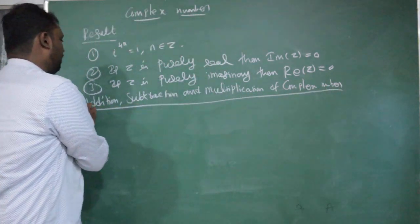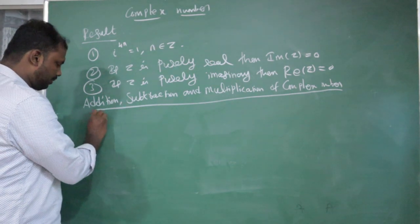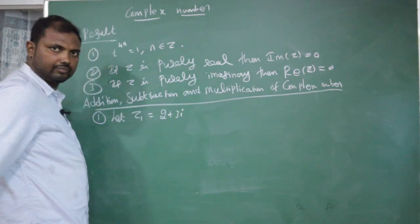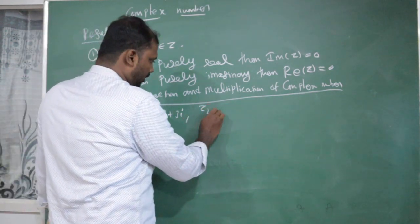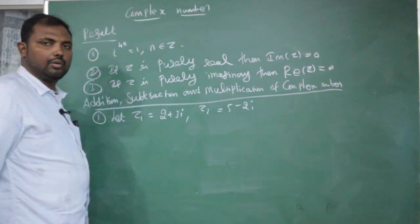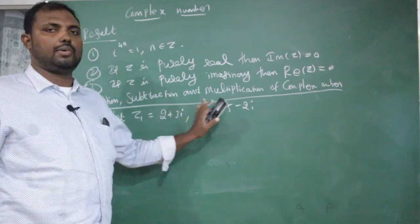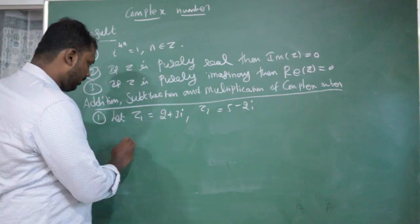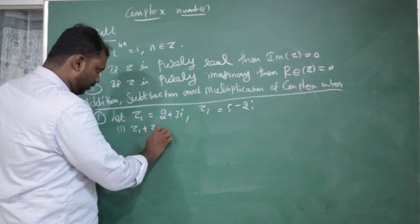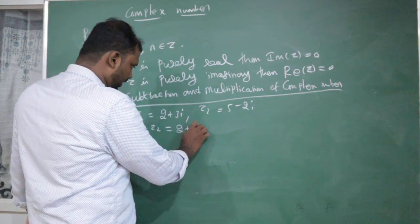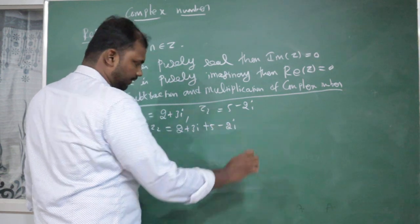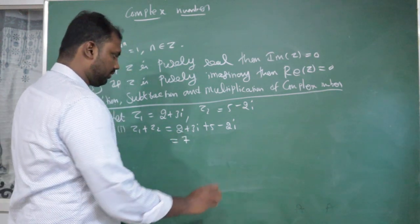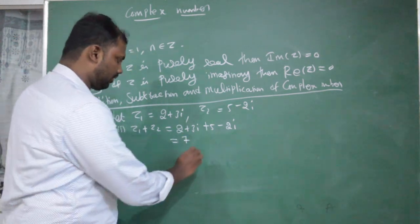Addition of complex numbers: let z1 equals 2 plus 3i and z2 equals 5 minus 2i. Then z1 plus z2 equals (2 plus 3i) plus (5 minus 2i). Real parts: 2 plus 5 equals 7. Imaginary parts: 3i minus 2i equals i. So z1 plus z2 equals 7 plus i.